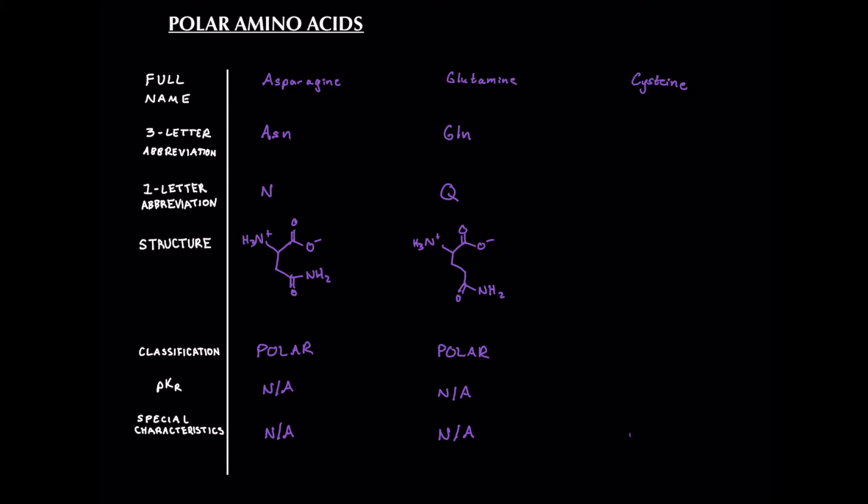Now finally, let's take a look at cysteine. Cysteine's three-letter abbreviation is CYS, pretty intuitive. Its one-letter abbreviation is C, also very intuitive. Now, let's draw the backbone and then the side chain. One carbon attached to a thiol group. So it looks like a hydroxyl or alcohol group, but instead of an oxygen, it has a sulfur.